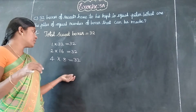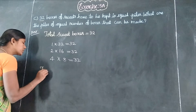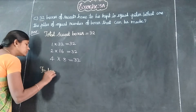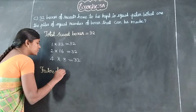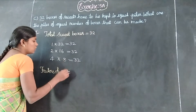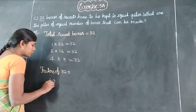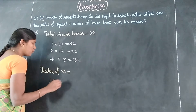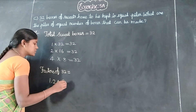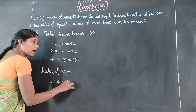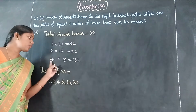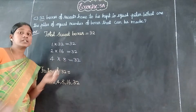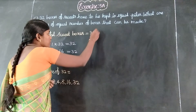These are the different numbers — the factors of 32. Factors of 32: one, two, four, eight, sixteen, and thirty-two. We can write the final answer.